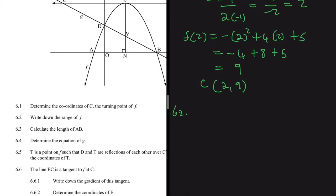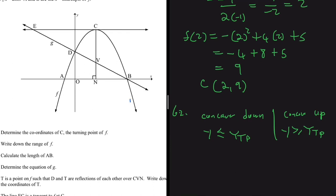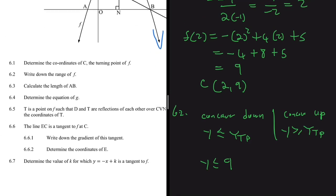For 6.2, we need to write down the range of f. If the parabola is concave down, the range is y ≤ y-value of the turning point. If concave up, it's y ≥ y-value of the turning point. Our parabola is clearly concave down — the y-values are ultimately going down — so the range is y ≤ 9. The y-values of this graph can never exceed 9; that is the highest point the graph can reach.